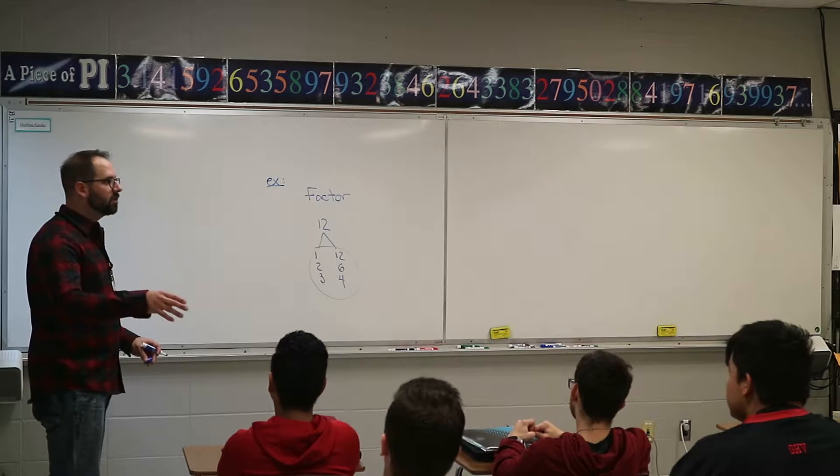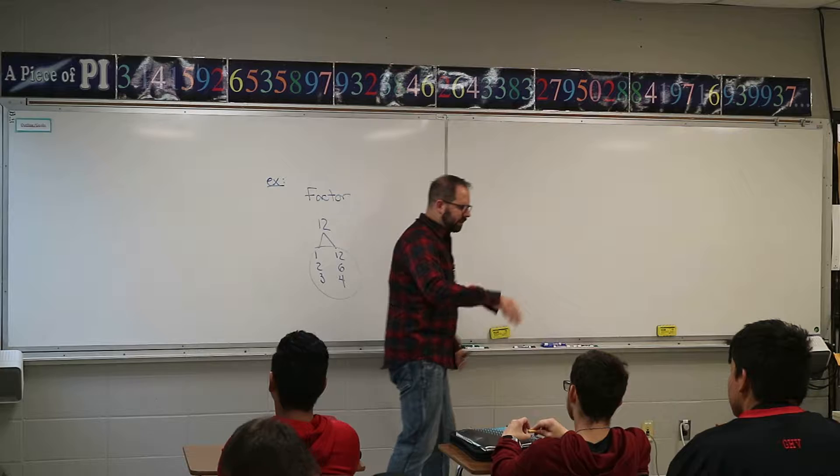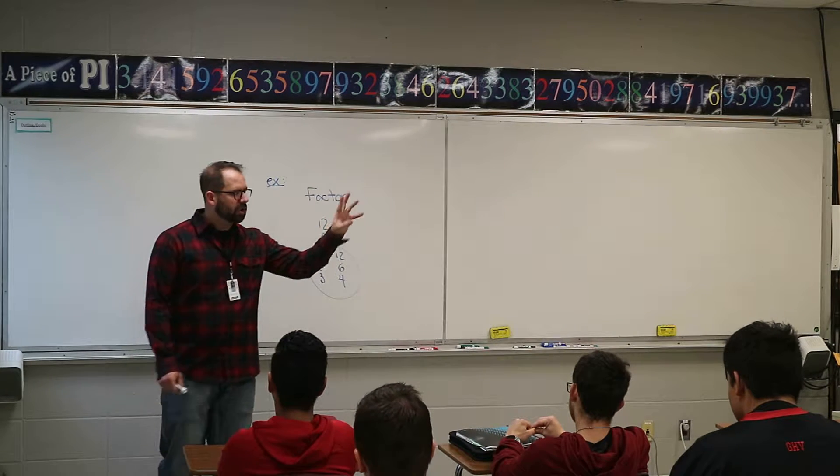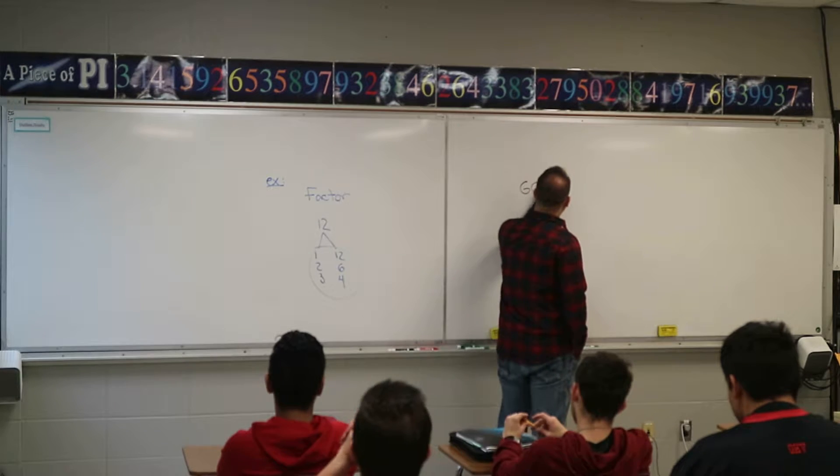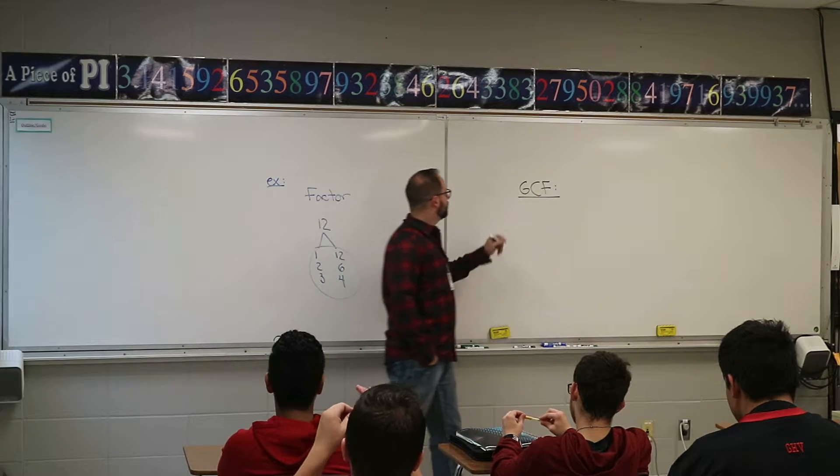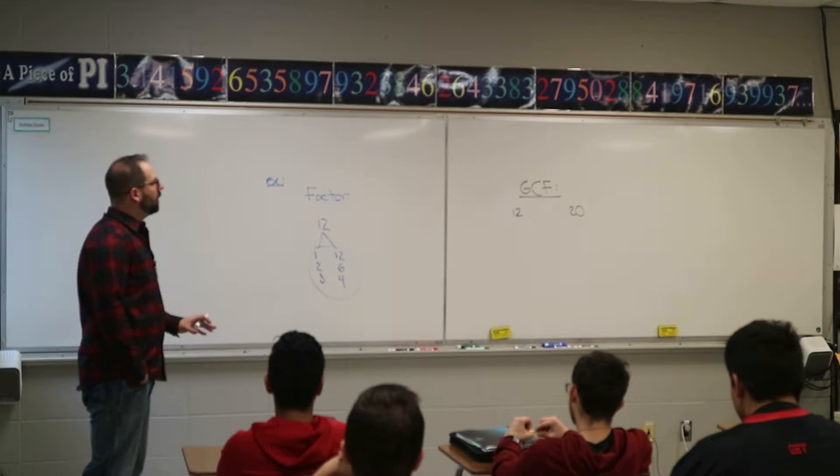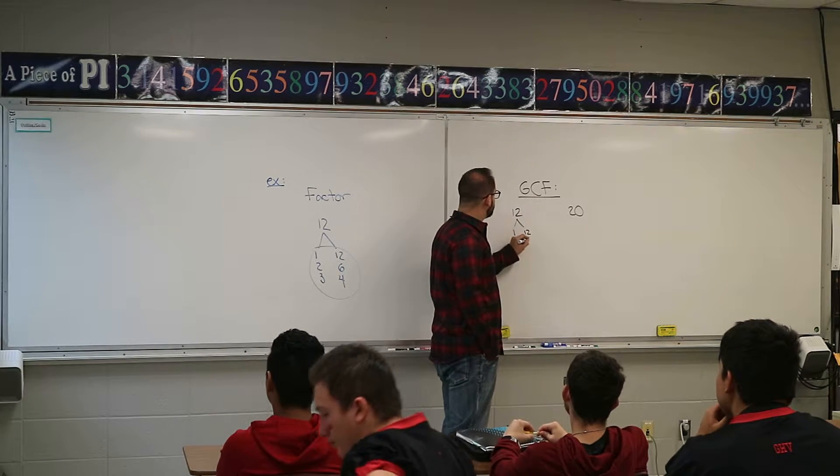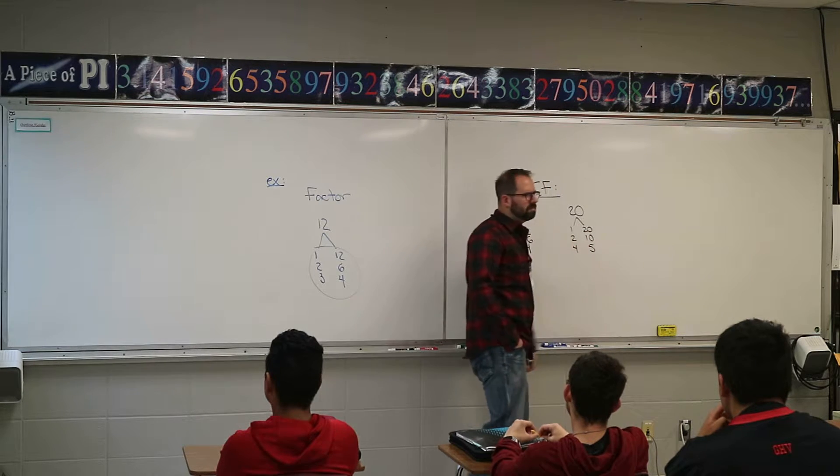That eventually molded into prime factorization. This is the one I want you to know for sure - you know how to list off all the different numbers that multiply. Then we went into GCF. This is always one of the questions we have where I list off two different numbers, let's say 12 and 20, and you're trying to pick out the biggest number that they both have. So let's list them: for 12, I have 1 and 12, 2 and 6, 3 and 4. For 20, you have 1 and 20, 4 and 5, 2 and 10.